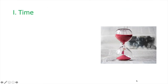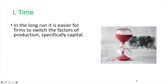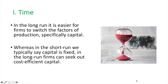First is time. In the long run it is easier for a firm to switch the factors of production, with a specific focus on capital. In the short run we typically held capital fixed. However, in the long run firms can adjust all factors of production and seek out capital to replace labour. A firm may choose to do so if it is more cost efficient. Thus, in the long run the elasticity of demand for labour is more elastic.